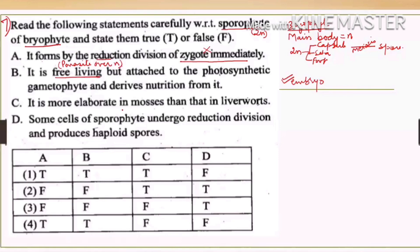Statement three — that the sporophyte is more elaborate in mosses than in liverworts — is correct. Statement four — that some cells of the sporophyte undergo reduction division to produce haploid spores — is also correct. So statements A and B are false, C and D are true, giving option two as the answer.